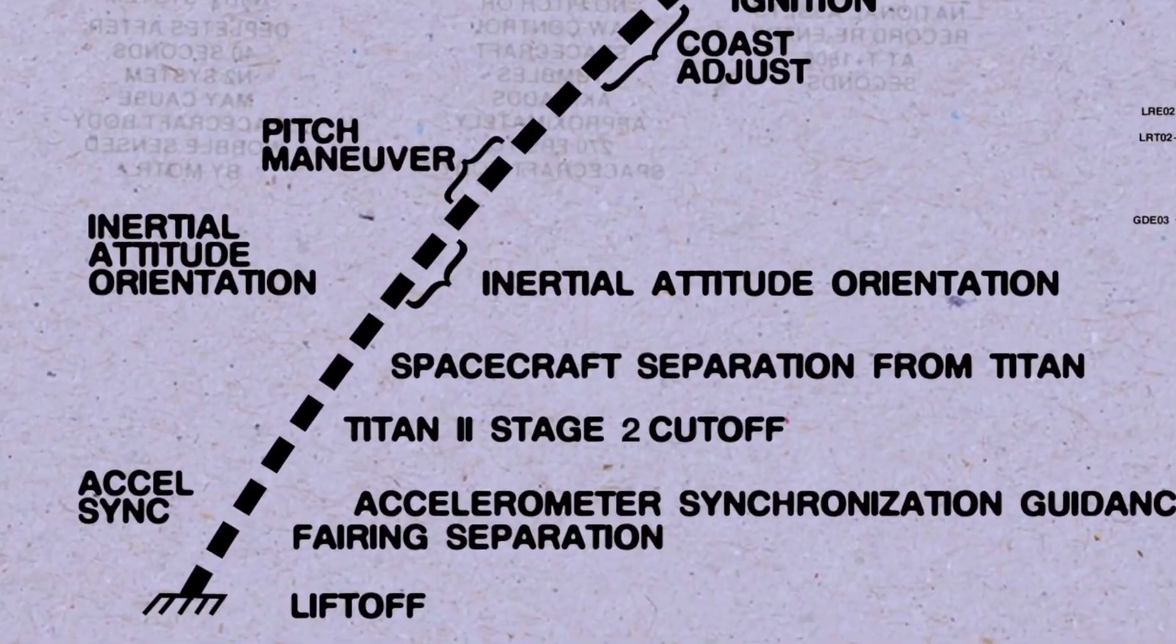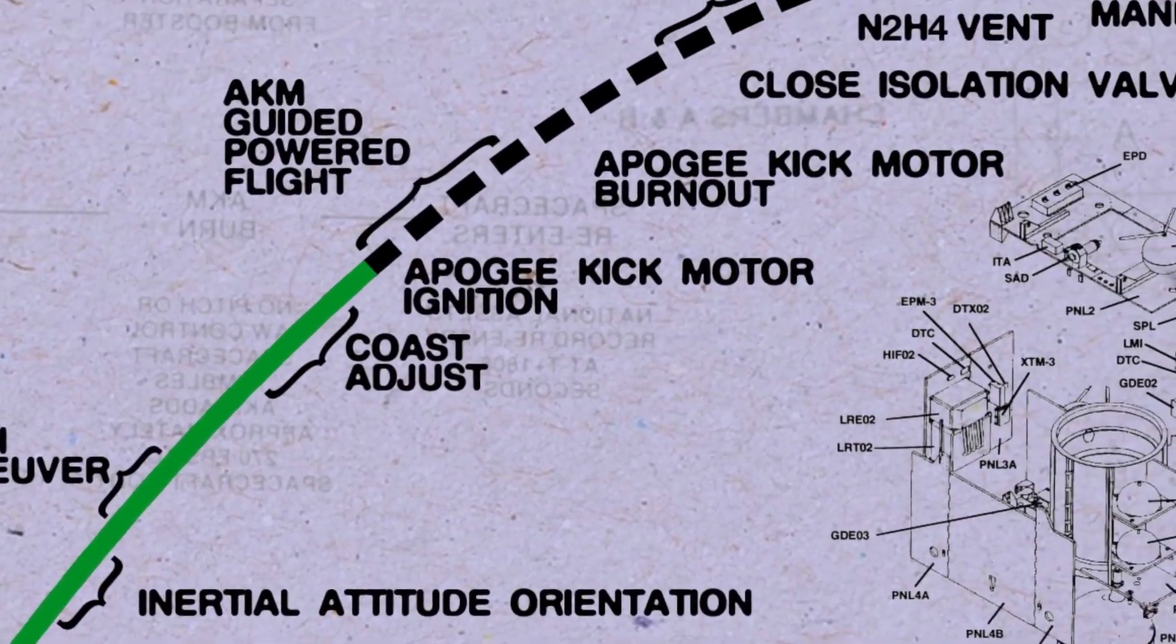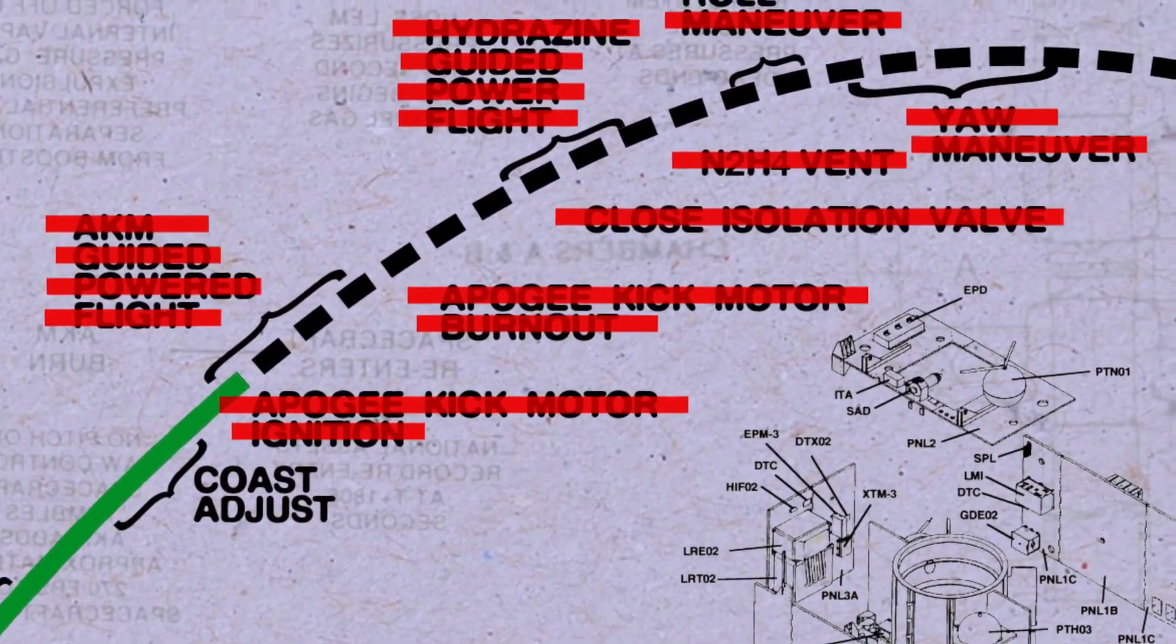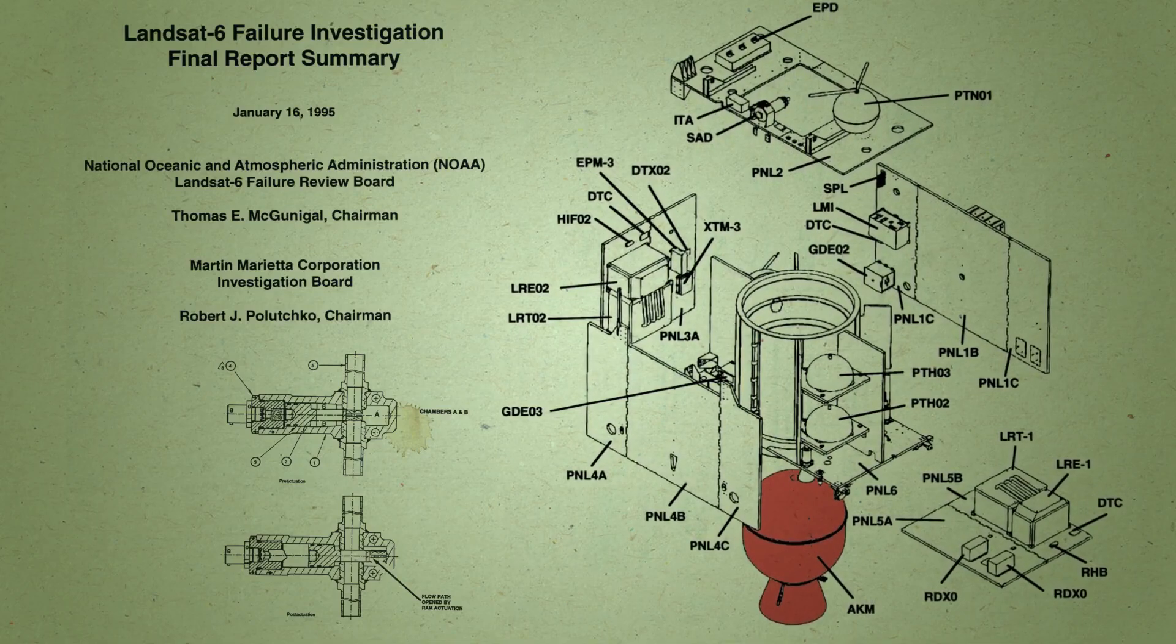NASA's team of scientists and engineers got to work immediately to figure out what went wrong. Turns out, it was a rupture in the rocket fuel chamber. They used failure as an opportunity to learn.